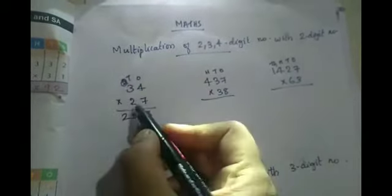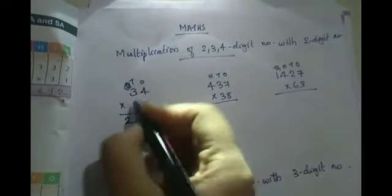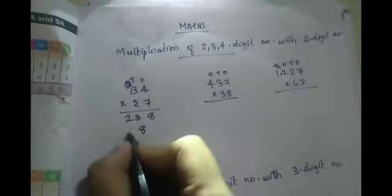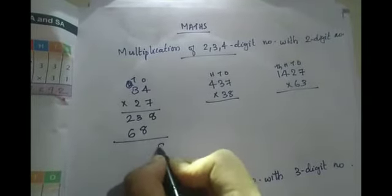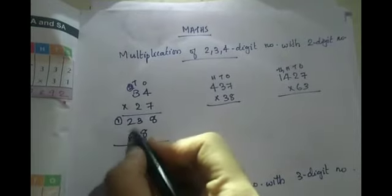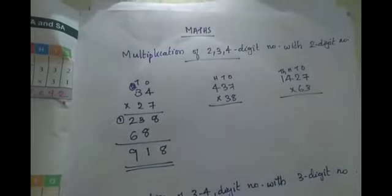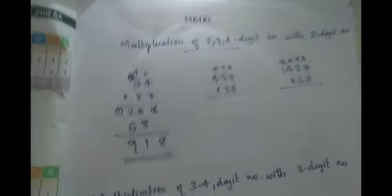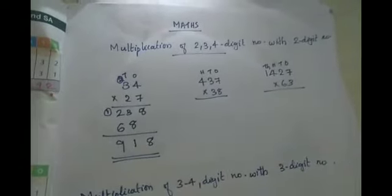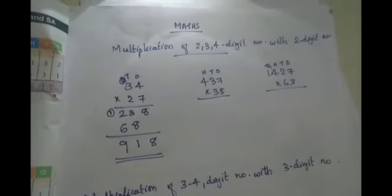So you use the 2, then 2 into 4 is 8 and 2 into 3 is 6. So your answer is 8, 8 plus 3 is 11, 1 carried over, 6 plus 2 is 8, 8 plus 1 is 9. So your answer is 918. What you have to do is check the places to correct it.